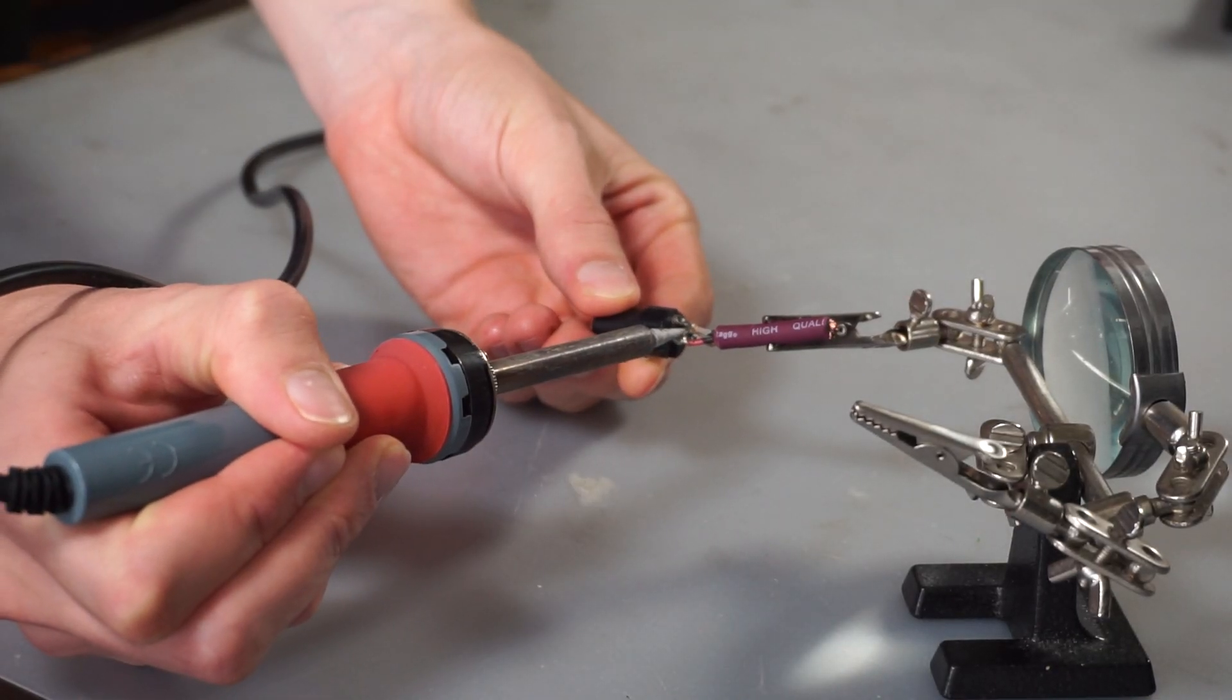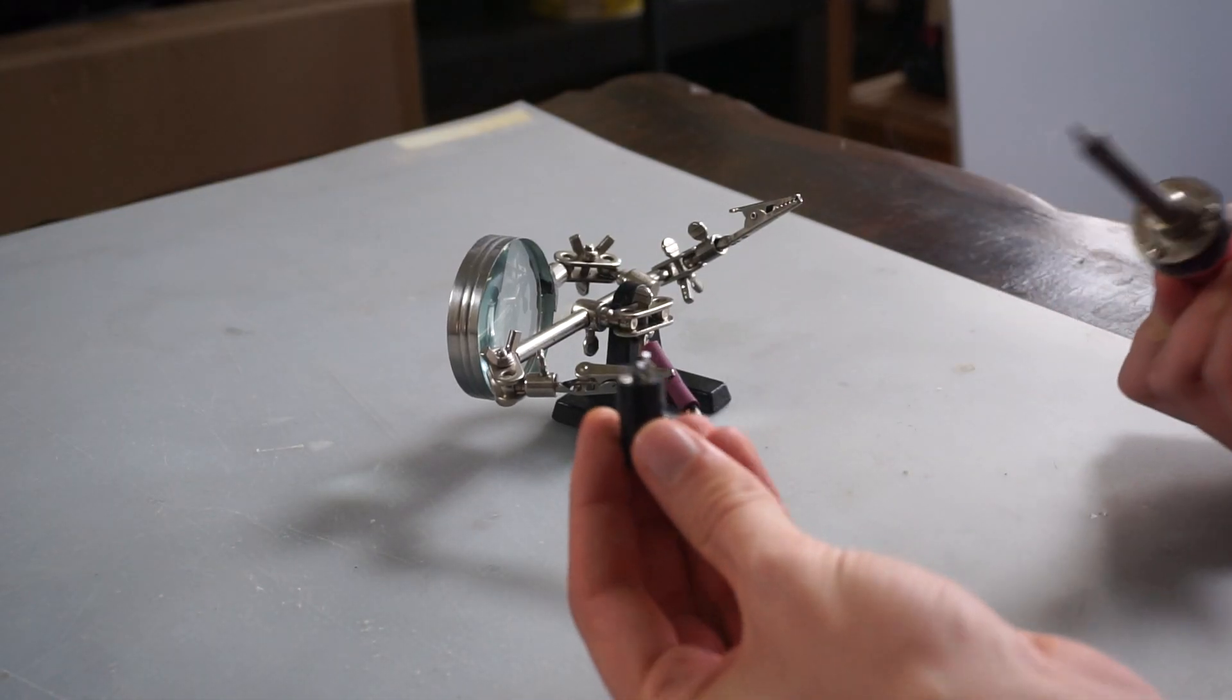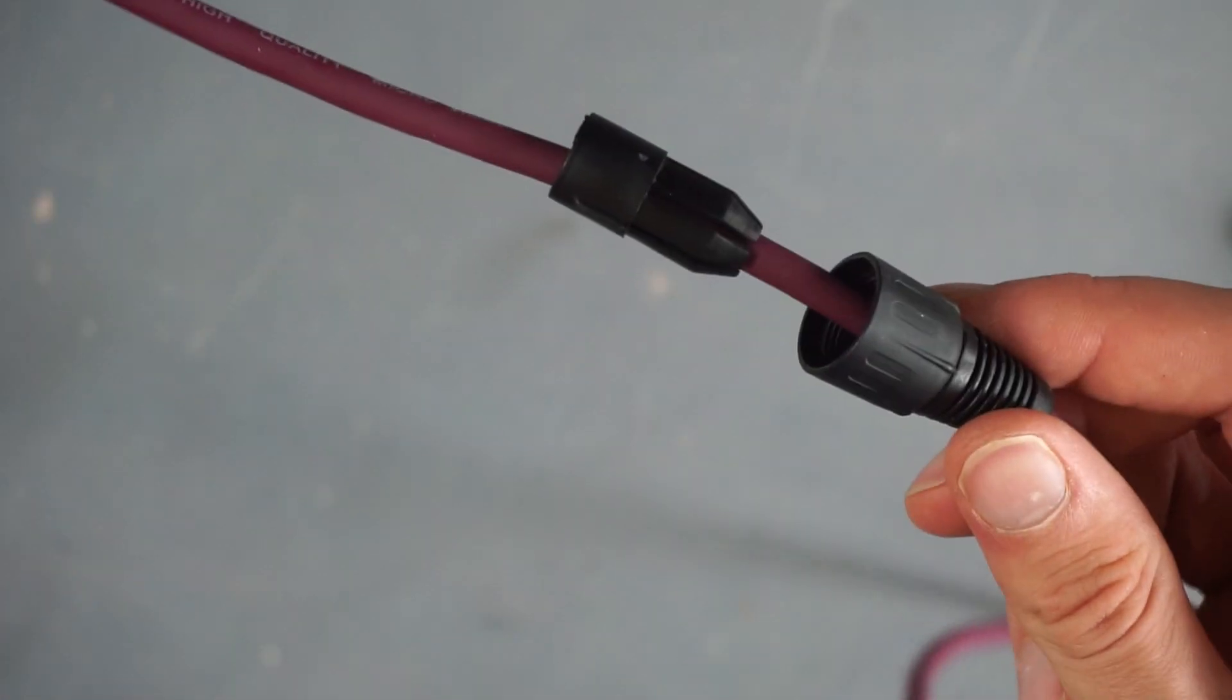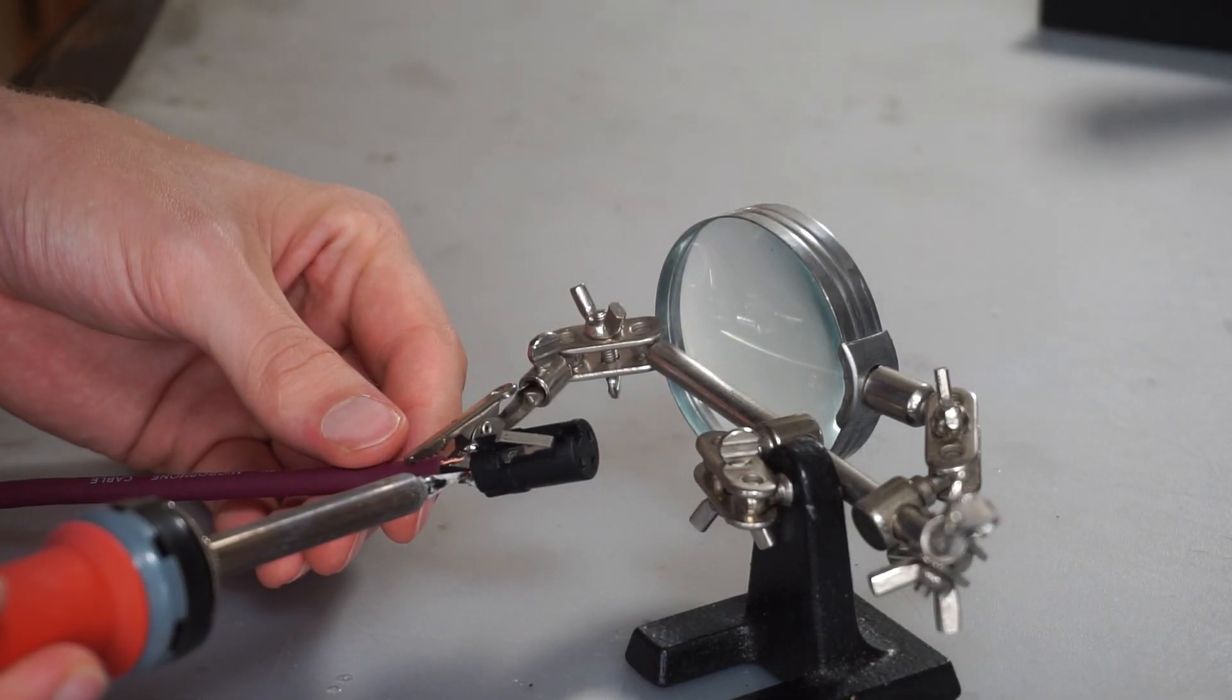And now that everything is ready, we can put everything back together, of course first making sure that all of the plastic parts that need to be on the cable are there. Now just soldering everything back.